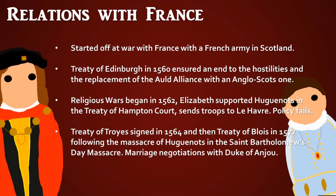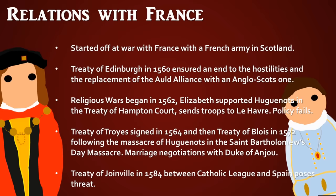Two years later the Treaty of Troyes recognised that Calais was completely lost to the English, though they received a sum of money. In 1572 there was the St. Bartholomew's Day massacre of French Protestants, but the two countries signed the Treaty of Blois, pitting themselves against Spain. Marriage negotiations with the Duke of Anjou, one of the brothers to the French king, began in 1579, and he went on to fight in the Netherlands in the early 1580s.